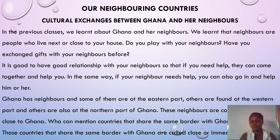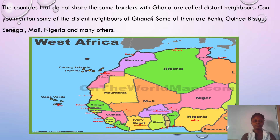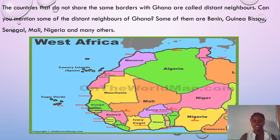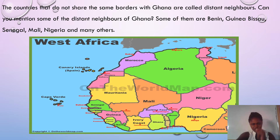In the picture, can you show me where Ghana is? Ghana is at the very bottom — Ghana is down here. You can see our map has been shown there. Ghana has neighbors all around it. The countries that do not share the same borders with Ghana are called the distant neighbors. We can talk about Algeria, Mali, Mauritania, Guinea, and Nigeria — they are all distant neighbors of Ghana.